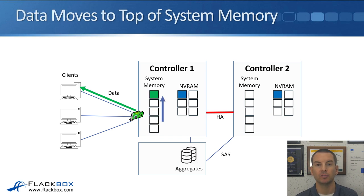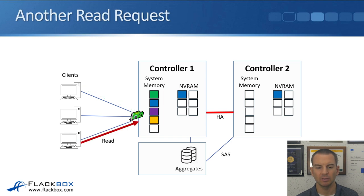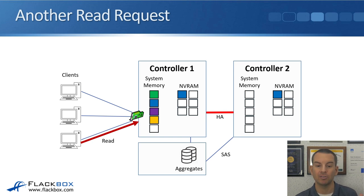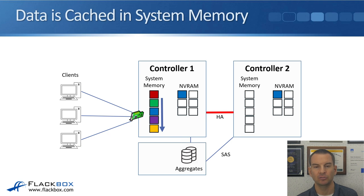When the data is read from cache, it moves back up to the top of the system memory cache. Whenever there's a read or a write, that data gets cached at the top of the system memory cache and everything else gets bumped down a slot. Then we have another read request — this time for red data, which was written a while ago and is not currently in the cache. Controller 1 checks the cache, doesn't find it, so it fetches it from disk. The red data goes into the top slot in system memory, everything else gets bumped down, and the data is sent to the client.